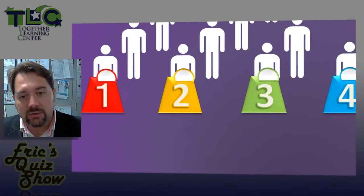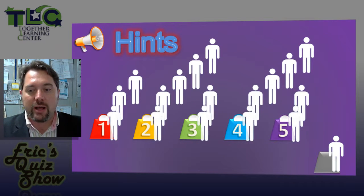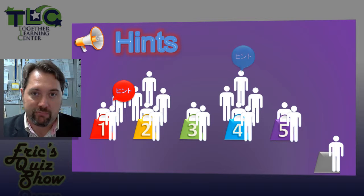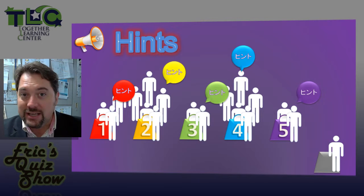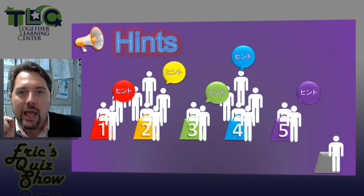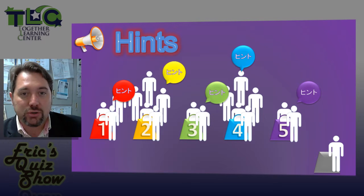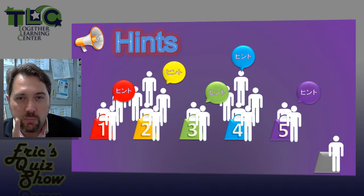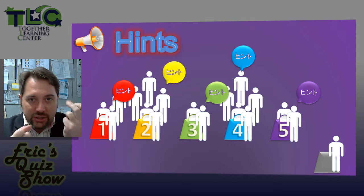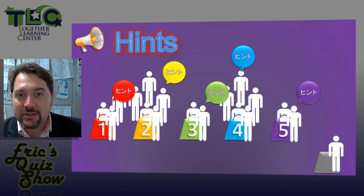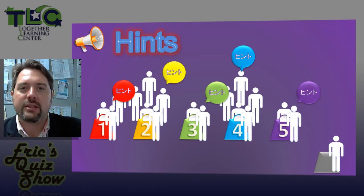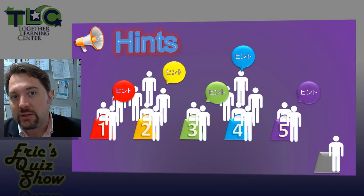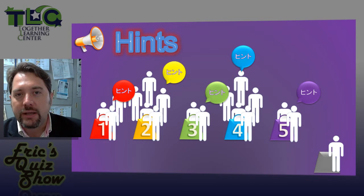The person up in front holding the buzzer will turn around and look away from the screen. The rest of the teammates will look at the screen and try to give hints to the person holding the buzzer. There are a couple of rules though. You can't use Japanese or any other language — you must use English. And you can't use gestures. And you can't say the word that appears on the screen. You can only give hints.